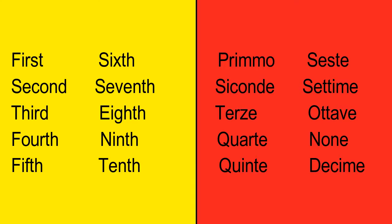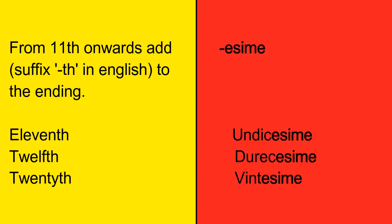Now ordinal numbers: First — Prima. Second — Seconda. Third — Terza. Fourth — Quarta. Fifth — Quinta. Sixth — Sesta. Seventh — Settima. Eighth — Ottava. Ninth — Nona.